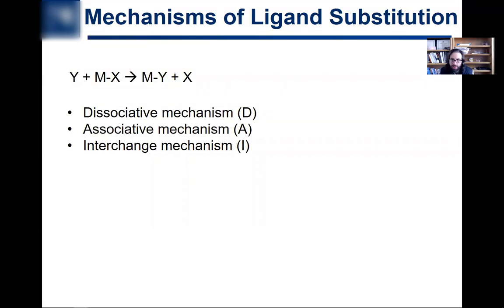Now that we've gone over the rates of ligand substitution reactions, we're going to talk about the different mechanisms that can occur. This gives you a flavor of the mechanistic chemistry that can go on with D-metal complexes. We're doing this ligand substitution reaction where an incoming ligand Y displaces a leaving ligand X. There are three main mechanisms: the dissociative mechanism, the associative mechanism, and the interchange mechanism.